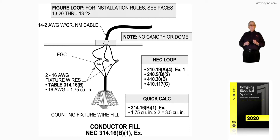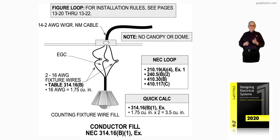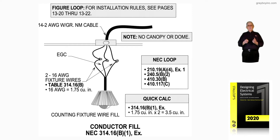Notice two number 16 AWG fixture wires. Per table 314.16B, that would be 1.75 cubic inch — that would be just one of them. The quick count would say the exception gives 1.75 cubic inch times 2 equals 3.5 cubic inch. And the counting of fixture wire fill is being counted here.